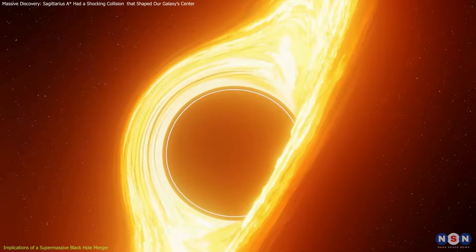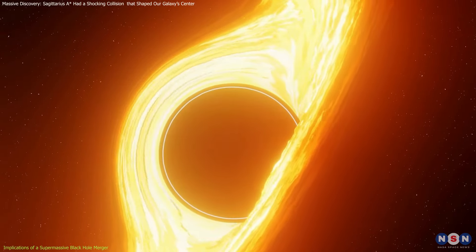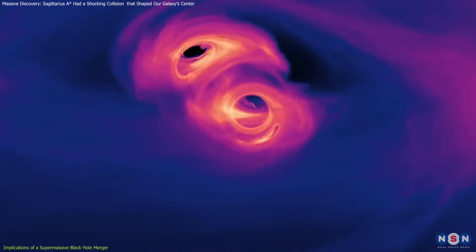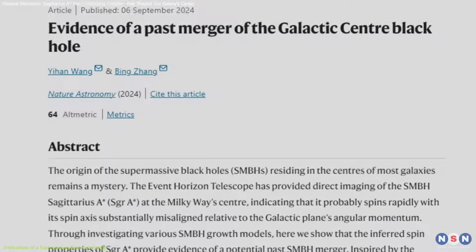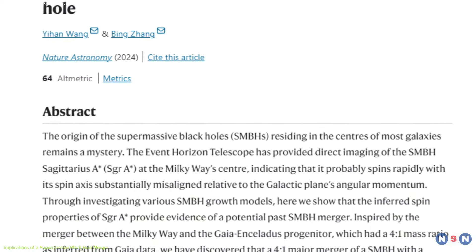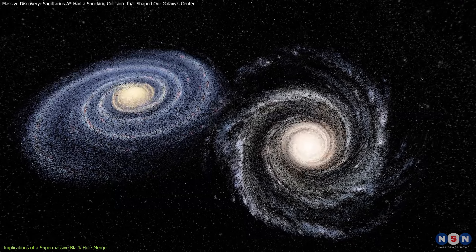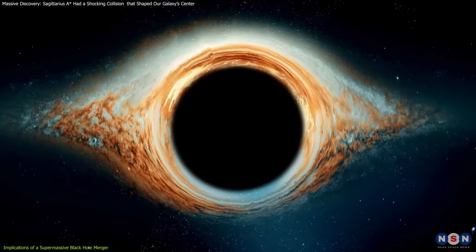The misaligned high spin observed in Sagittarius A-Star suggests a history marked by dramatic events rather than slow, steady growth. In essence, this discovery invites us to rethink how we approach models of galaxy dynamics and black hole development.